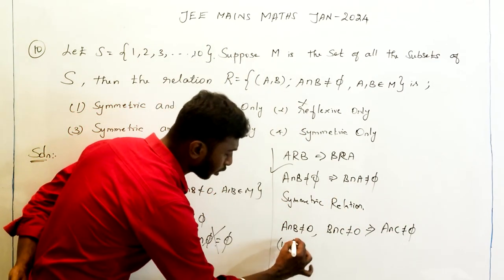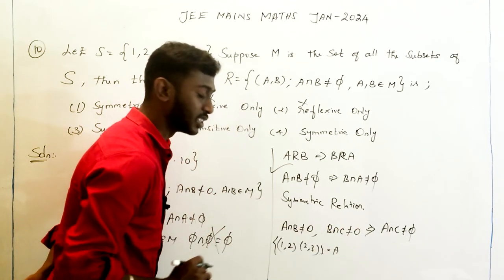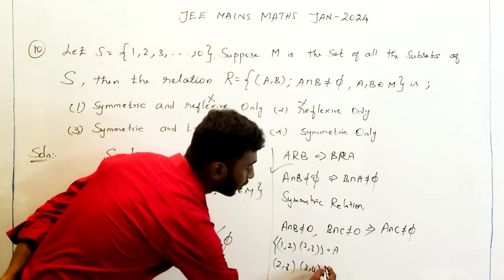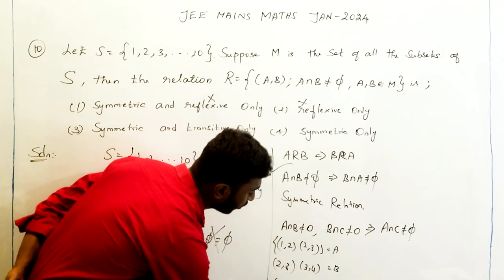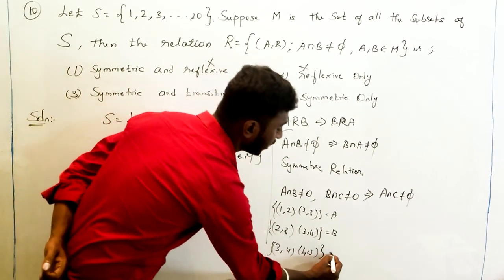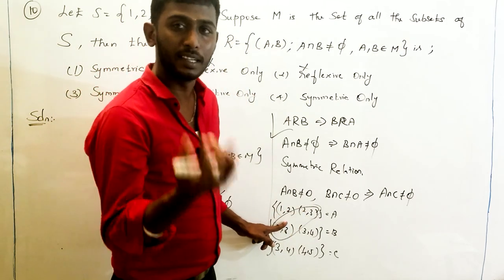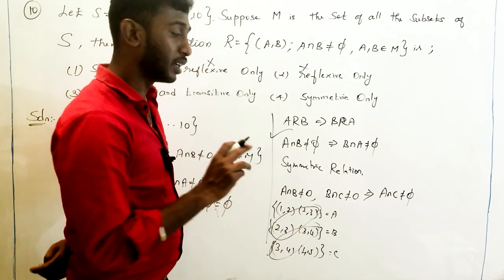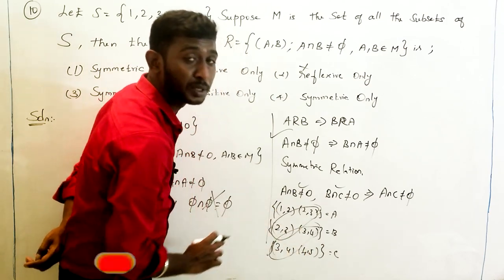To check transitivity, take a counterexample: let A = {1,2}, B = {2,3}, C = {3,4}. Then A ∩ B = {2} ≠ ∅ and B ∩ C = {3} ≠ ∅, but A ∩ C = {1,2} ∩ {3,4} = ∅. So transitivity fails.